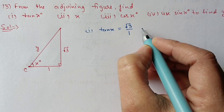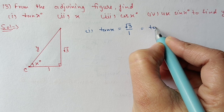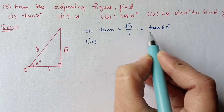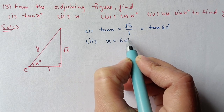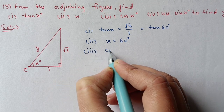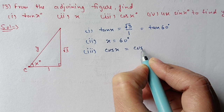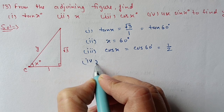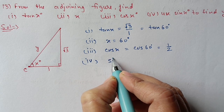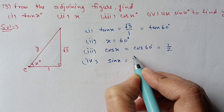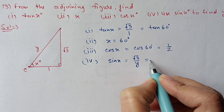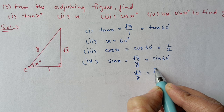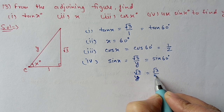Root 3 is the value for tan 60 degrees, so tan x equals tan 60 degrees. For the second part, comparing angles, x equals 60 degrees. For the third part, cos x means cos 60 degree, and cos 60 degree value is 1 by 2. For the fourth part, we find the value of y using sin x. Sin x equals perpendicular by hypotenuse, and this equals sin 60. Sin 60 value is root 3 by 2.